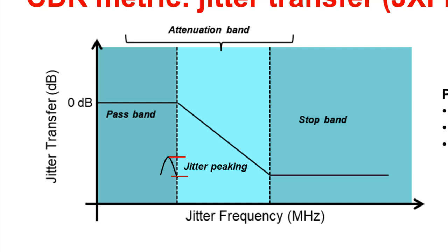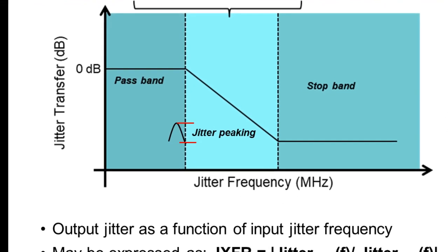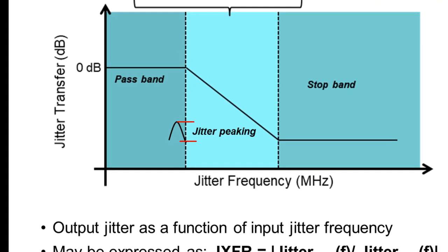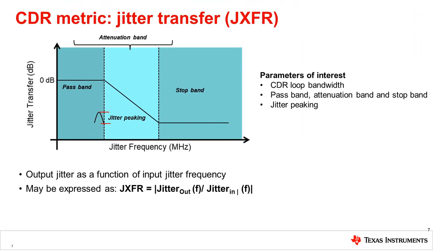One additional parameter of interest is the jitter peaking, defined as the increase or boost in jitter transfer at the pass band to attenuation band cutoff frequency. So the key parameters of interest for jitter transfer are CDR loop bandwidth, pass band, attenuation band and stop band, and jitter peaking.